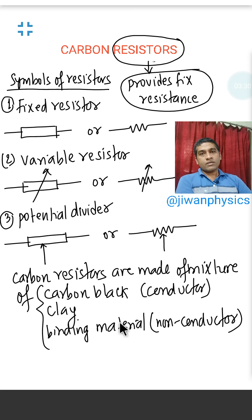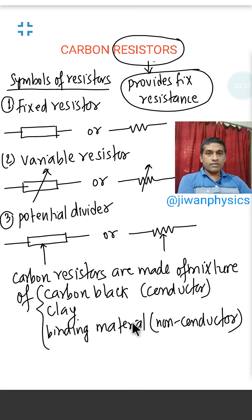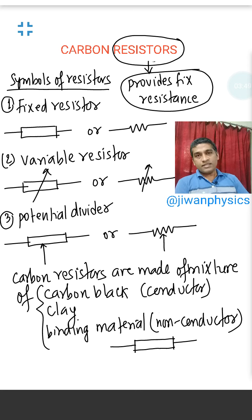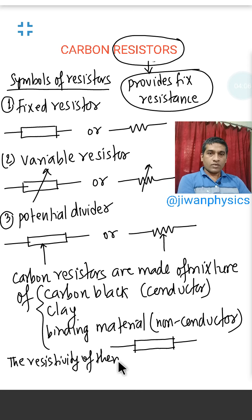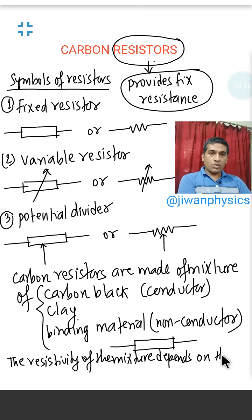The mixture is heated and moulded into a rod shape. Carbon resistors are rod-shaped and there are two wires at the ends to connect in the circuit. The resistivity of the mixture depends on the proportion of carbon — this is to be noted.